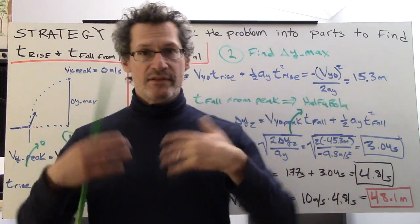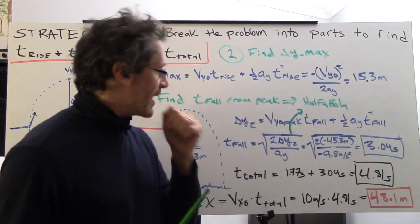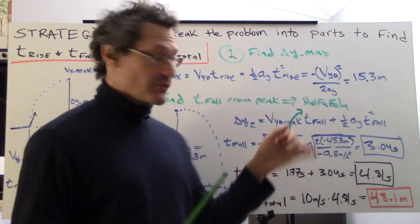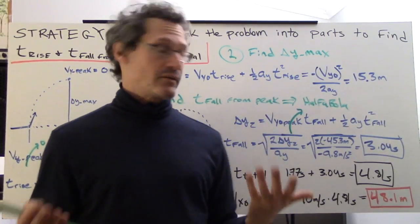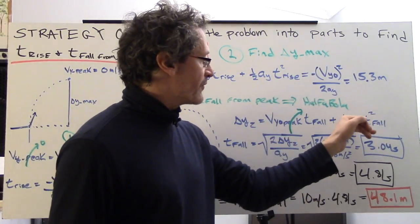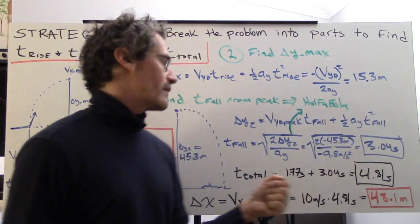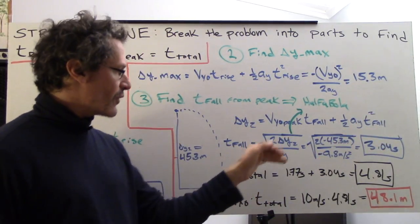Again, we use the second equation with time in it. This is zero, so that's really cool because it goes away. We have one half a y t squared for the fall.